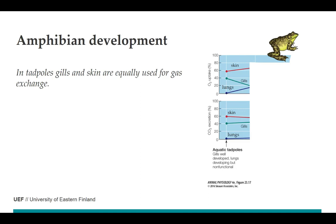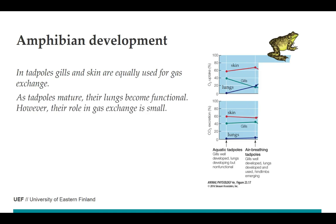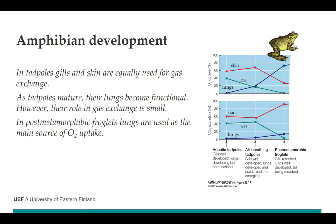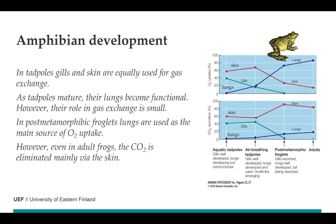In tadpoles, gills and skin contribute equally to gas exchange — both oxygen uptake and carbon dioxide excretion. As tadpoles mature and develop lungs, the role of the lung in gas exchange is initially very small, with most oxygen still coming through the skin. After metamorphosis in adult frogs, the lungs become the main source of oxygen uptake. However, the lung's role in eliminating carbon dioxide remains minimal — even in adult frogs, almost all carbon dioxide is eliminated through the skin.